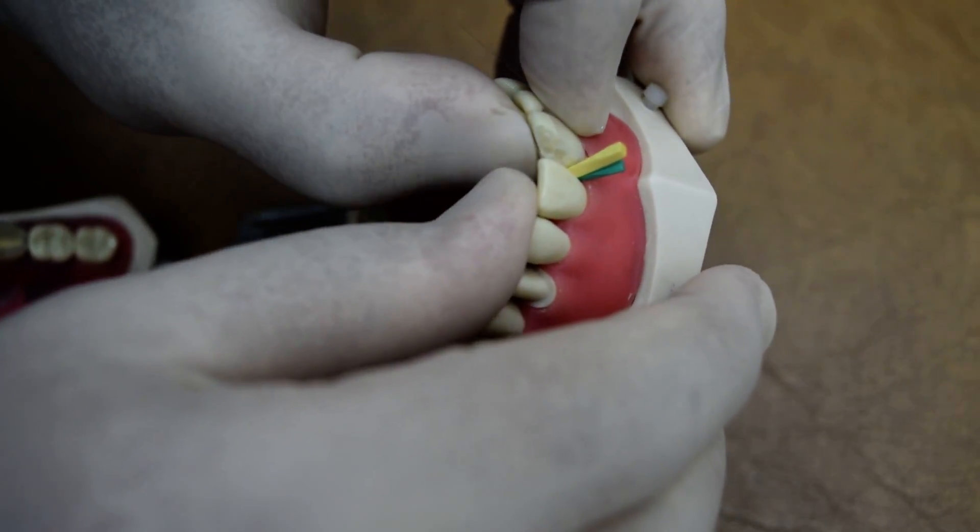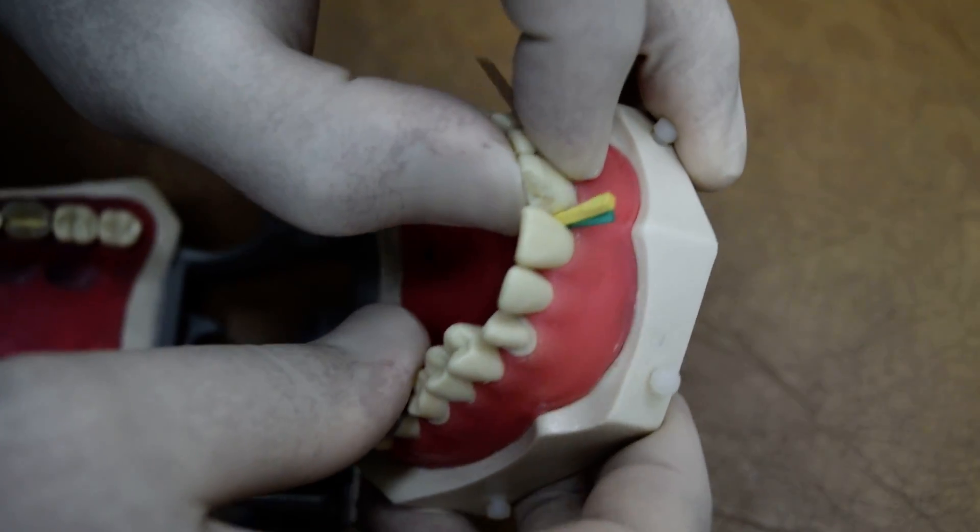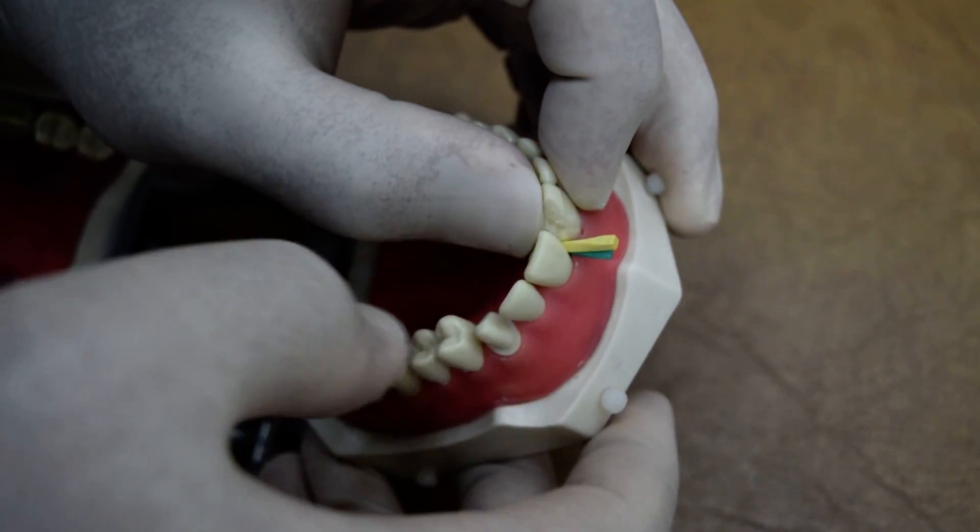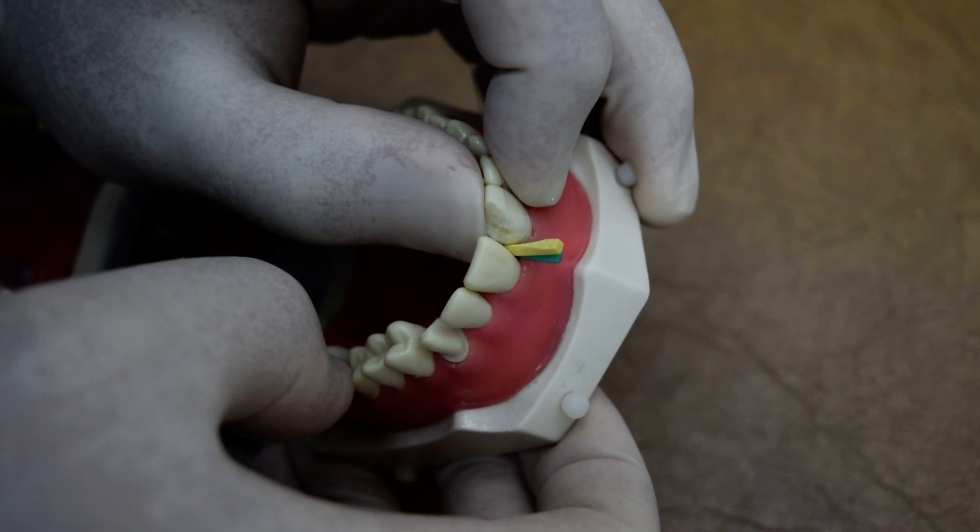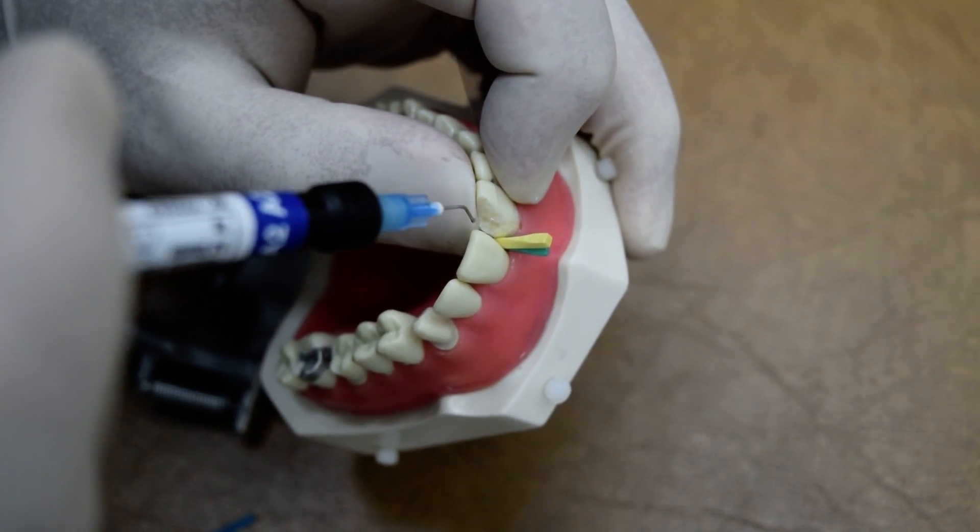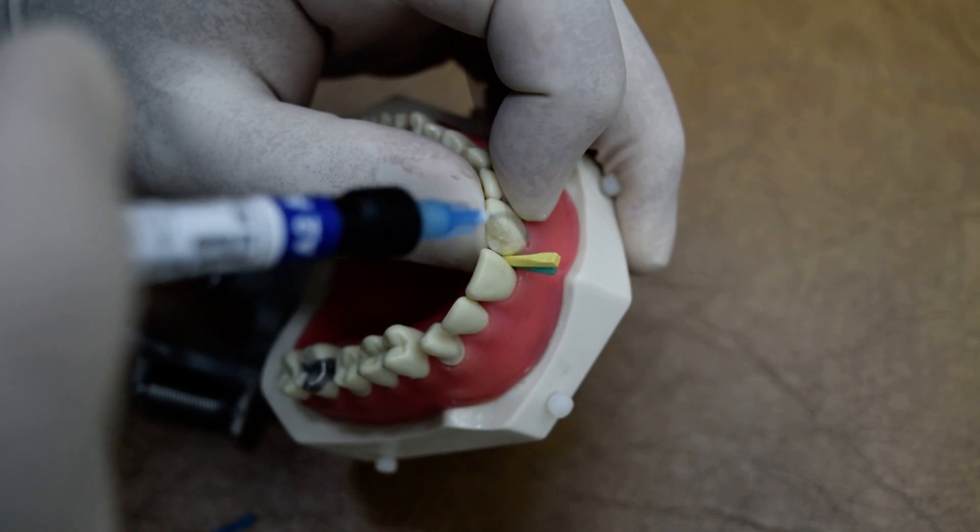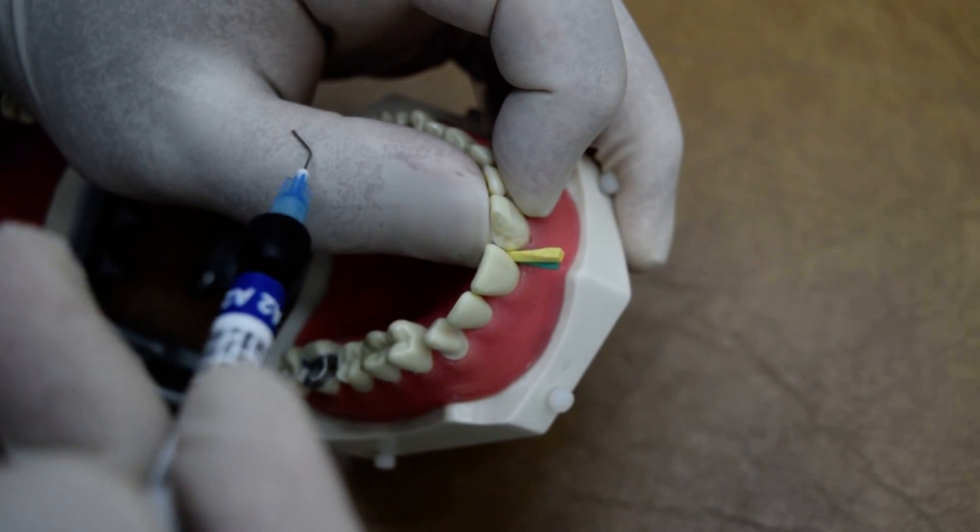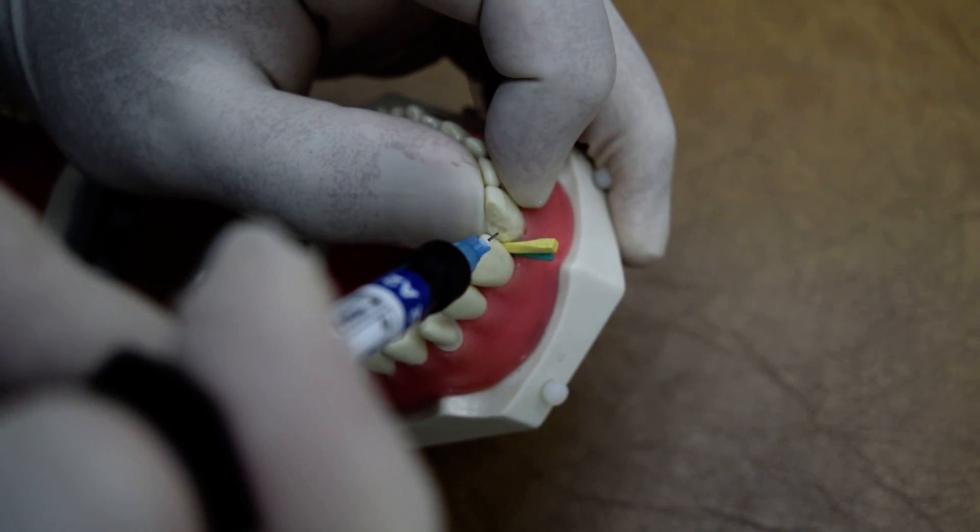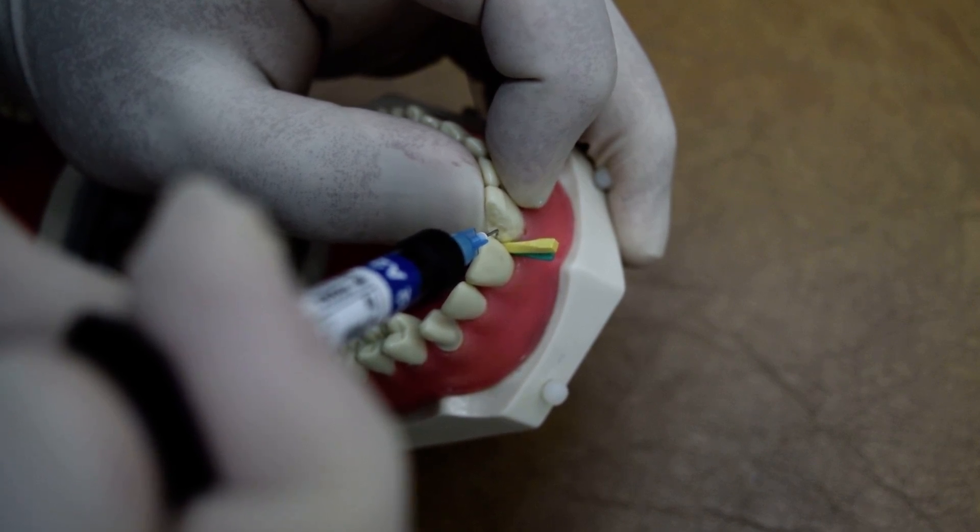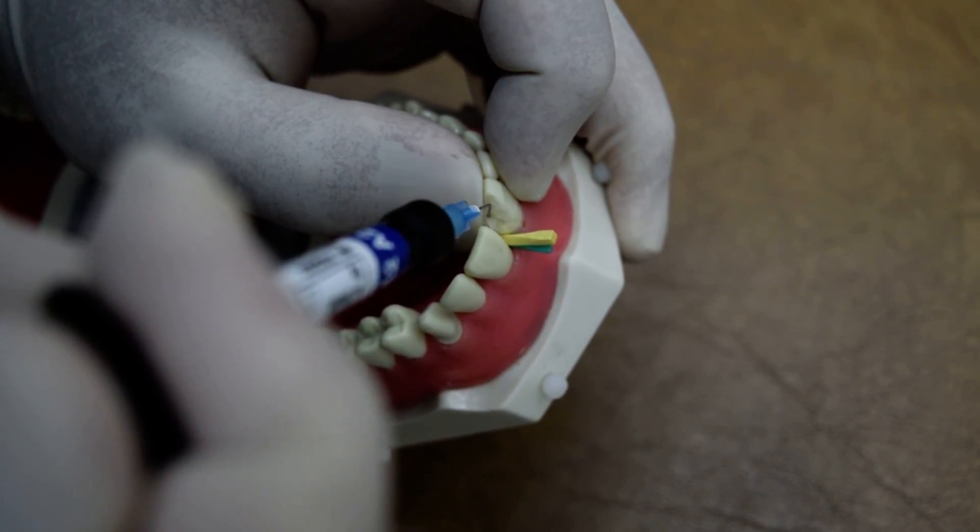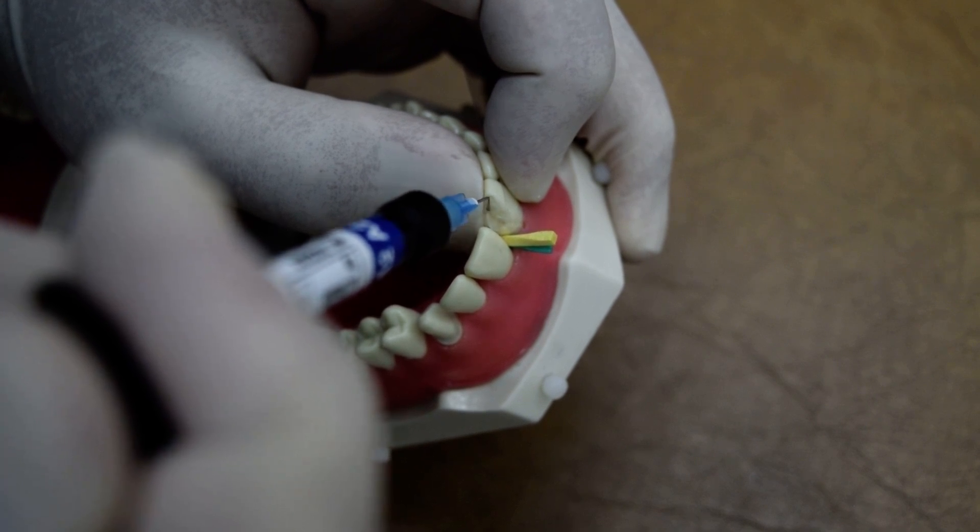Then we will start with the palatal surface first and put your finger to support the palatal surface. And then we will fill the palatal with part of the mesial. First, make sure that your tip is close to the surface to avoid any porosities, and always keep the tip of your syringe inside the material while you are dispensing it.